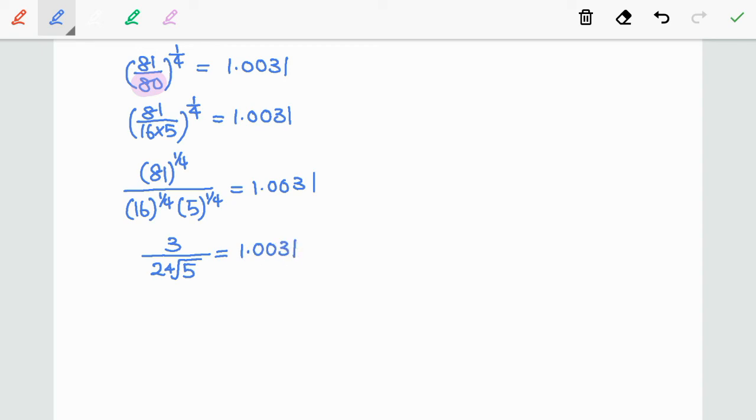Now, to eliminate 3/2, we multiply 2/3 on both sides. So, we have 1 over fourth root of 5 is equal to 1.0031 times 2/3. And this gives us 0.6687.